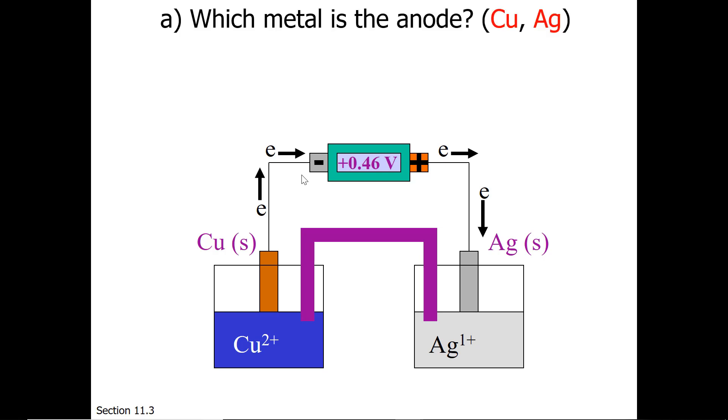So our question is, which metal is the anode? Does the anode go with the negative sign on your voltmeter, or the positive sign on your voltmeter? Well, I hope you're going to go with the negative sign. So our copper is the anode.